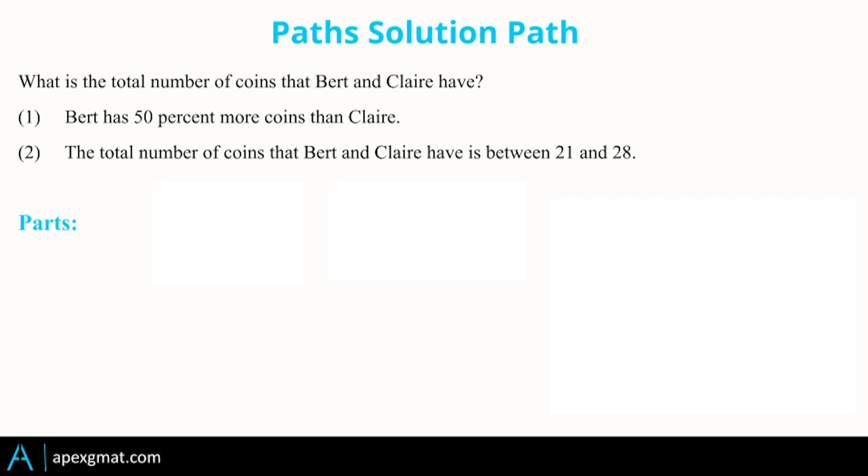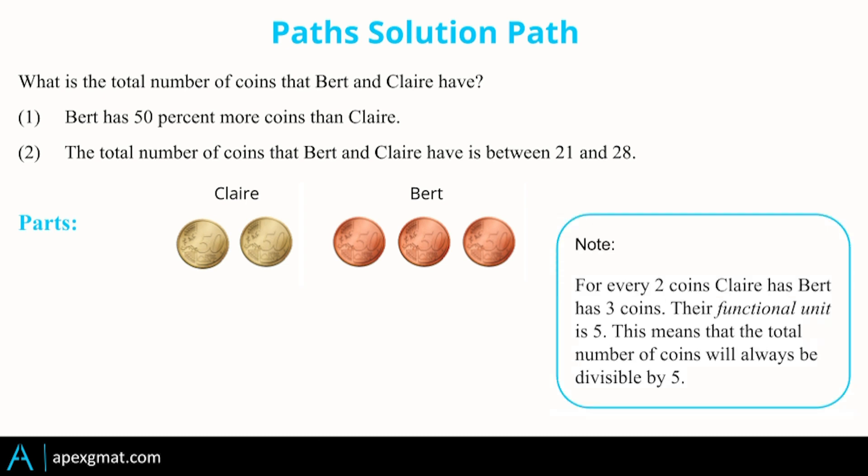We can also look at this in terms of parts. Notice that for every two parts Claire has, Bert has three parts. That is taking Claire's total and adding 50% gets from her two parts to his three parts. And the parts are arbitrary. We can cut them up any way we want to. We can make Claire's parts four, Bert's part six. But two and three is the simplest. So all told, Bert and Claire are going to have five parts. The parts are undefined, but this tells us that the total must be divisible by five, whatever it is.